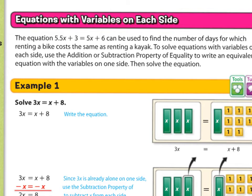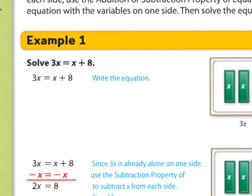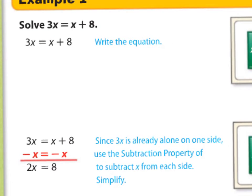What do we mean when we say an equation with a variable on each side? Well, the equation 5.5x plus 3 equals 5x plus 6 can be used to find the number of days for which renting a bike costs the same as renting a kayak. To solve equations with variables on each side, use the addition or subtraction property of equality to write an equivalent equation with the variables on one side, then solve the equation.